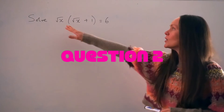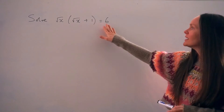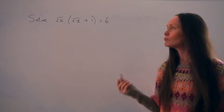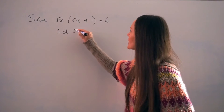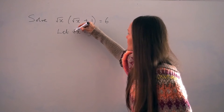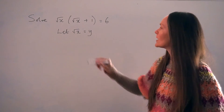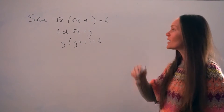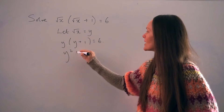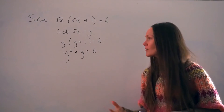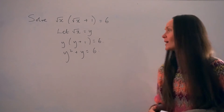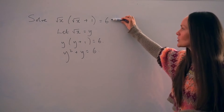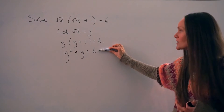In the next question, we have to solve root x multiplied by root x plus 1 equals 6. The first thing I'm going to do is make a substitution and replace root x with the letter y. So I change both terms to y, giving me y brackets y plus 1 equals 6. If I expand the brackets, I get y squared plus y equals 6. I now have a quadratic equation which I should be able to solve quite easily. Your goal is to make a substitution so that you can rewrite the question as a nice-looking quadratic, which is much easier to solve.